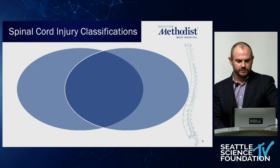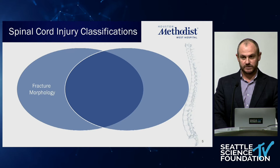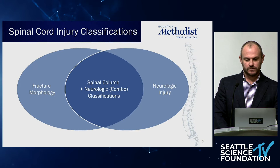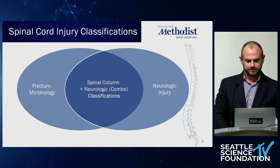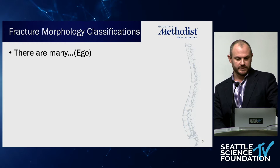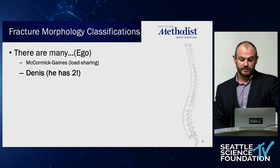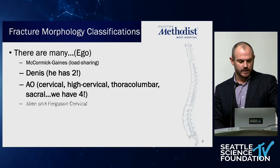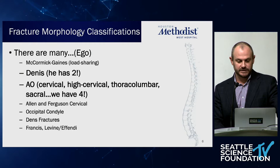As far as spinal cord injury goes, there are really three main types of classification systems: one looks at fracture morphology, another looks at neurologic status or neurologic injury, and the third combines the two into what I'll refer to as a combo classification going forward. We could go on for ten slides naming all the fracture morphology classification systems throughout the 20th century — McCormick, Gaines, load sharing, Denis (who has two classification systems), the AO system with four classifications, Allen and Ferguson, occipital condyle types, Stens fracture types, Francis-Levine — it goes on and on.